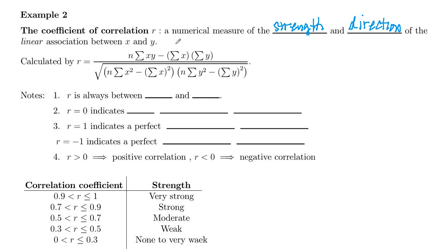Now some notes here for this coefficient of correlation. It is always between negative one and positive one. So it can't go less than negative one, can't go greater than positive one. R equals zero, that indicates no linear relationship or no linear correlation. So there might be a relationship, but it's not a linear relationship.